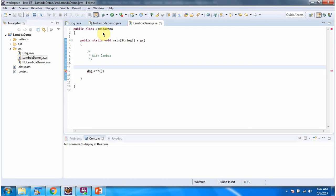Here I have defined the class LambdaDemo. It has a main method. With Lambda, we will see how we can provide implementation of dog interface.